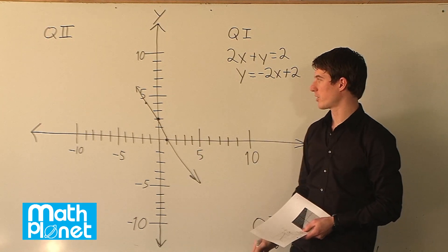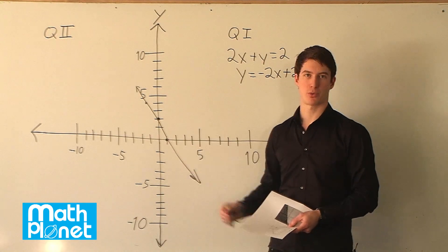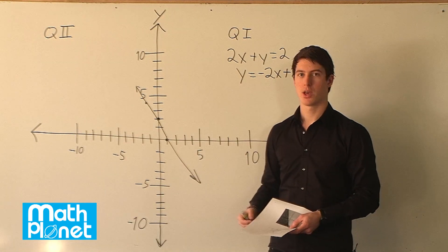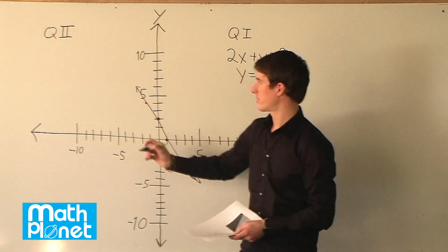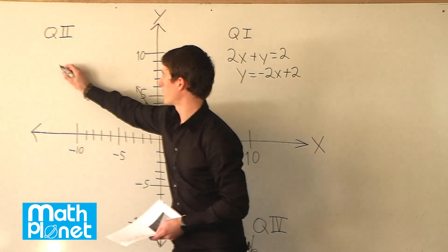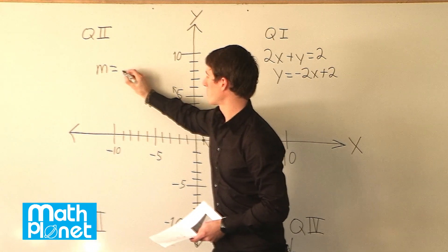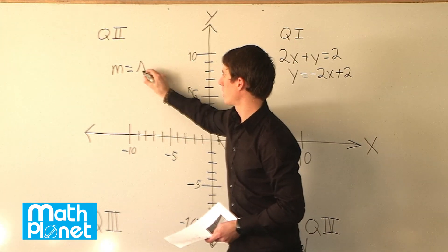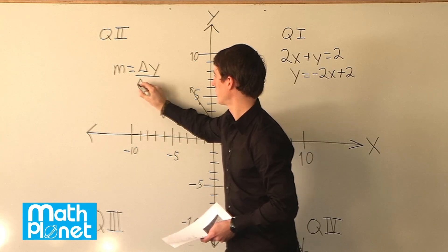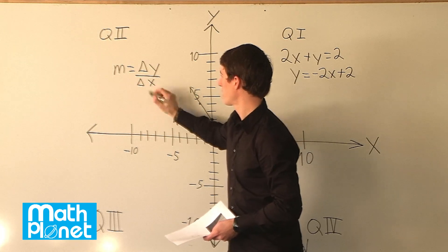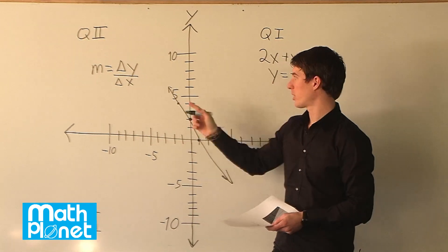To find the slope we need to find the rise over run, as we call it. The slope equation or formula uses m for slope, and sometimes we say rise over run or delta y over delta x. We need to pick two points and plug them in.